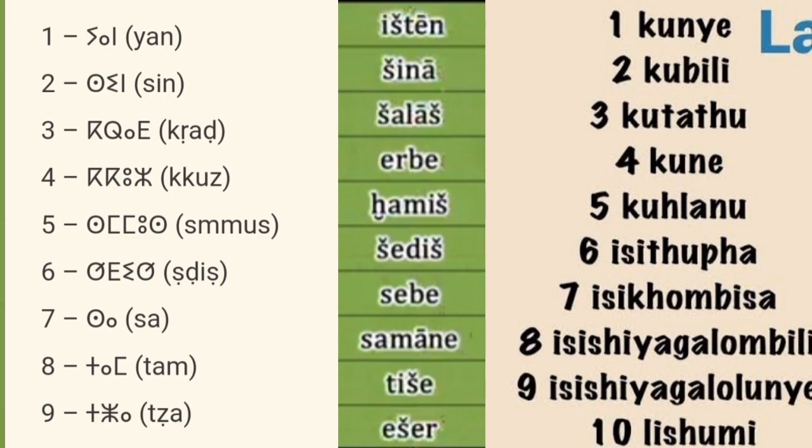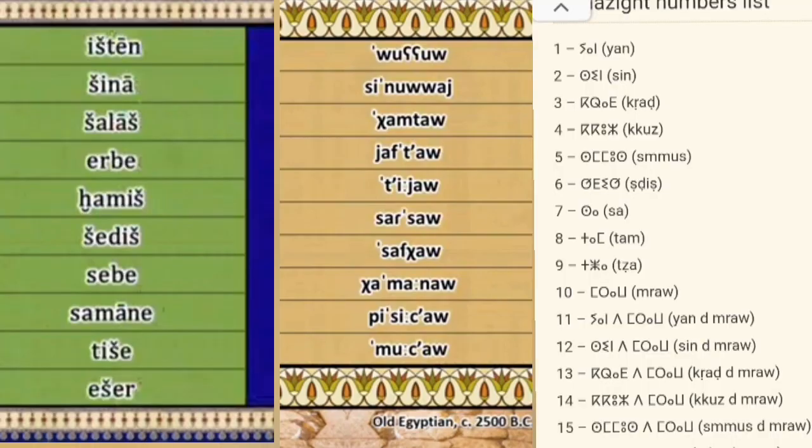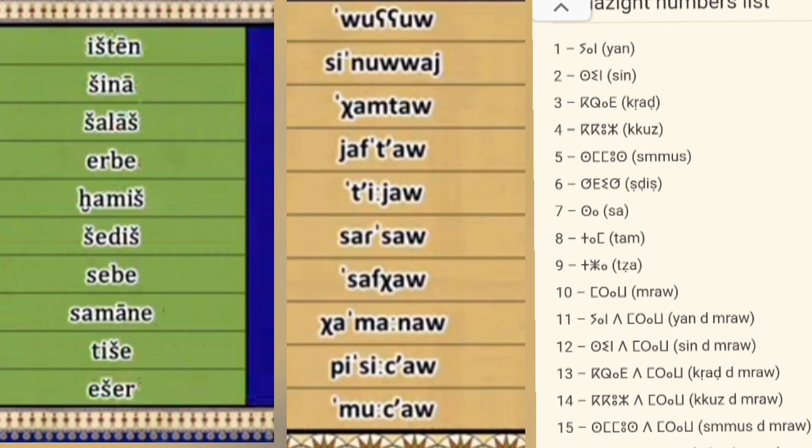Now we move on to the next number. The number two seems to have nothing to do with the Bantu languages. But 'Sina,' 'Snuway,' and 'Sin' in Amazigh, which is an African language, all seem to be the number two. But the word 'Bili' in Zulu, which means two, doesn't seem to have anything to do with this. This might be because this was after the language split.